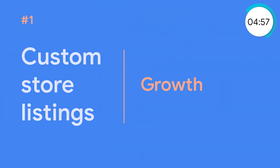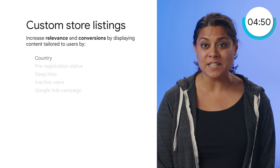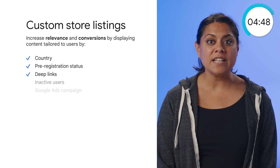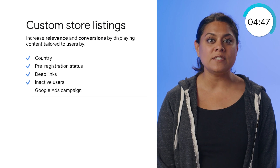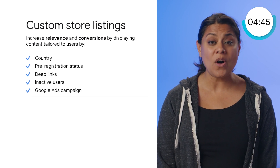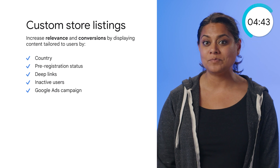First up, we have custom store listings. These are a great way to increase installs and conversions, and you can create up to 50 of them. You can use screenshots, videos, descriptions, and icons for all the audience segments listed here.